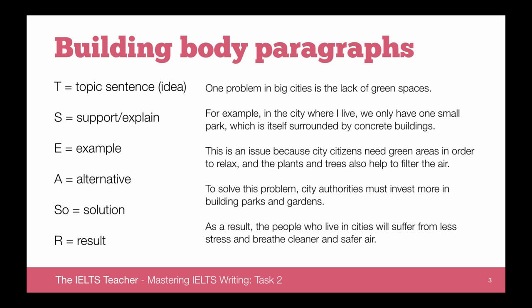The first sentence is always going to be a topic sentence. This will contain your general idea for the paragraph. It's very important that this sentence is nice, clear, and concise — not too long — and very clearly shows what you're going to be talking about in the paragraph. For example, in a problem and solution essay: 'One problem in big cities is the lack of green spaces.' Very, very clear.